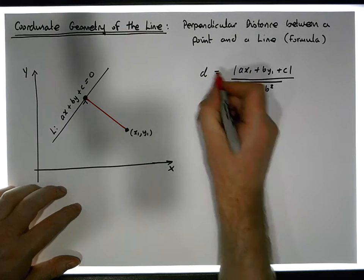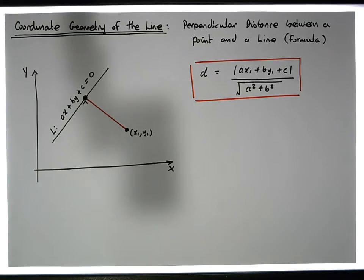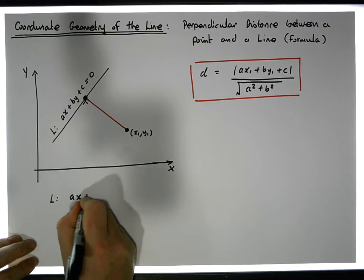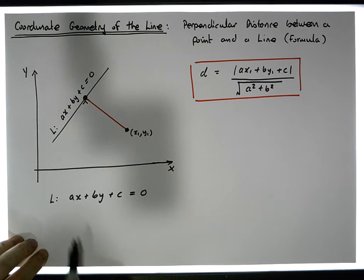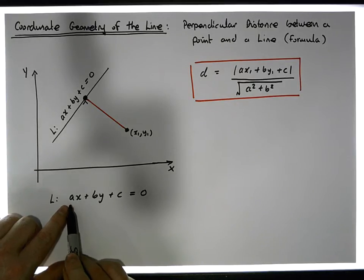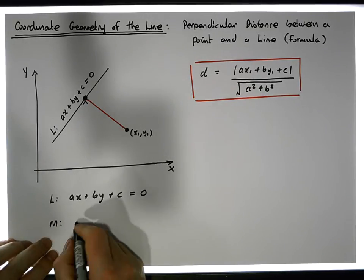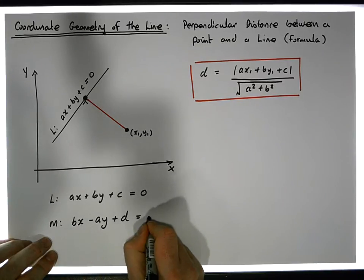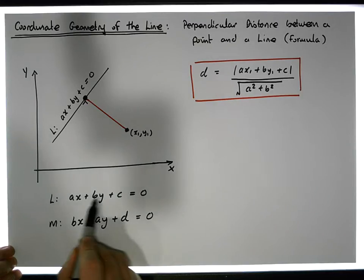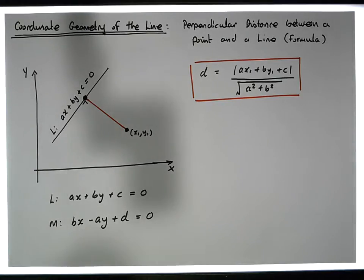This distance is given by the formula we showed. What we'd like to do is derive this formula — there's a lot of algebraic work involved. We know line L is AX plus BY plus C equals zero, and it has slope minus A over B. A line M perpendicular to it will have an equation of the form BX minus AY plus D equals zero. These two lines are perpendicular because their slopes multiply to give minus one.